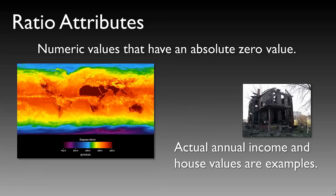Ratio attributes are numeric values that do have an absolute zero value. For example, the Kelvin temperature measurement scale has an absolute zero — zero degrees Kelvin is as cold as we can measure. Another example is actual annual income, as it is possible for an income to be zero if you have no yearly income.